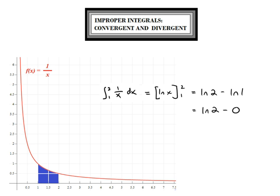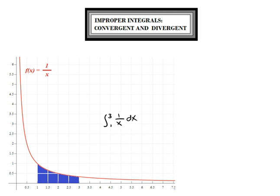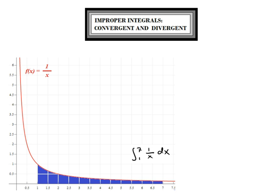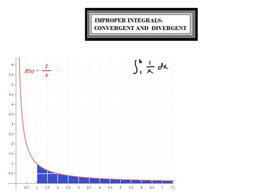Let's take a look at a second definite integral involving the same function. This time, let's integrate from 1 to 3. Last time we got the natural log of 2; this time we get the natural log of 3. If we integrate all the way to 7, we accumulate more area — the result is the natural log of 7, which is approximately 1.95. If we generalize the right bound, we get the result of the natural log of b.